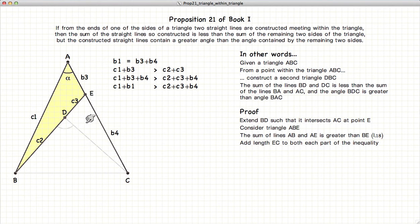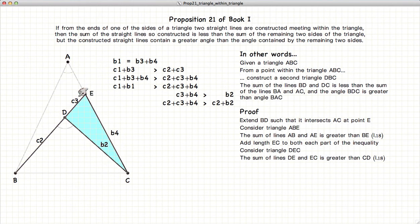Now let's look at this triangle. We have, again by Proposition 18, that DE or C3 plus B4 is larger than B2.